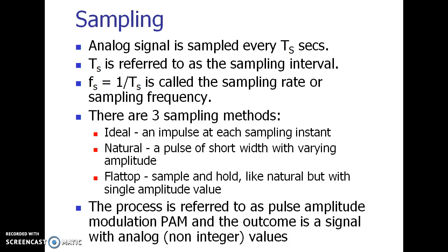Coming to sampling: we take an analog signal and get discrete samples in the time domain. Since at the receiver side we have to recover the signal back from those samples, there is a theorem applied for sampling. Let's suppose we sample a signal at every T_s seconds — that interval between two samples is called the sampling interval. The reciprocal, 1/T_s, is called the sampling rate or sampling frequency.